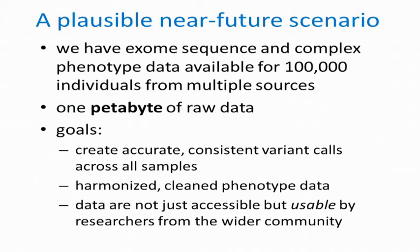One point I'll make later is that as we move forward into longitudinal sampling — things like RNA sequencing data over time or other deep longitudinal measurements of patients — the proportion of data that will be phenotype versus sequence will increase. The goals in this context would be: firstly, to create accurate and consistent variant calls that are consistent across all samples within this set regardless of which source they came from; secondly, to harmonise and clean the phenotype data, which of course is very difficult; and finally, to make sure the data are not just accessible to the community but are actually usable — so that biologists and people from pharmaceutical companies can actually use these data to address their specific biological questions.